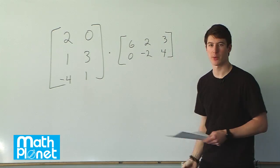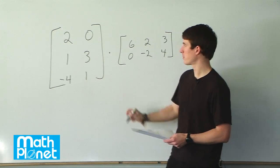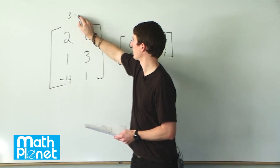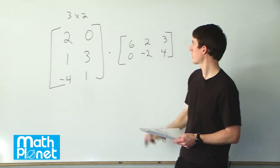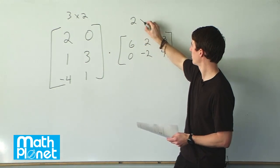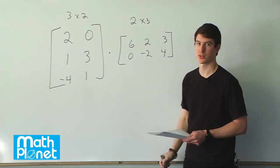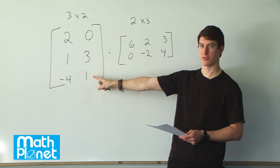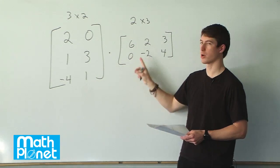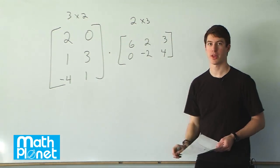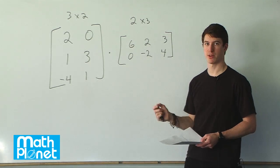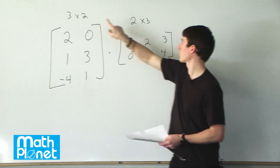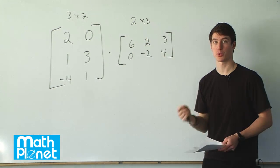So the question is, can we multiply these? We look at the order of the rows and the columns. Here we have a 3-row by 2-column matrix and here we have a 2-row by 3-column matrix. The columns from the first have to be the same as the number of rows from the second, and these are the same. The dimension of the final product is going to be what you have left on the outside: 3 by 3.